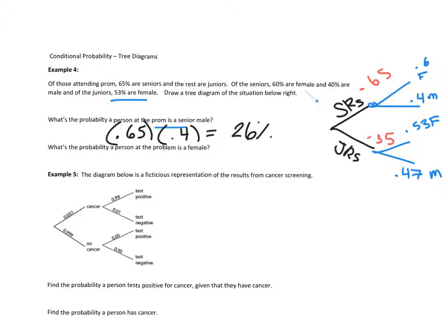Looking at each branch: 0.65 × 0.6 gives the probability of a senior female; 0.65 × 0.4 gives a senior male; 0.35 × 0.53 gives a junior female, and so on. If you add up all the multiplied branch probabilities, they sum to 100%.